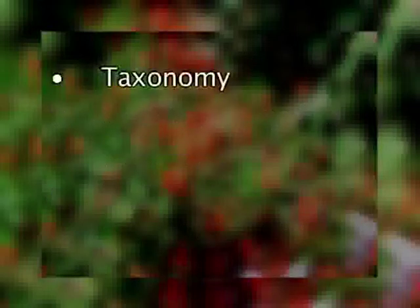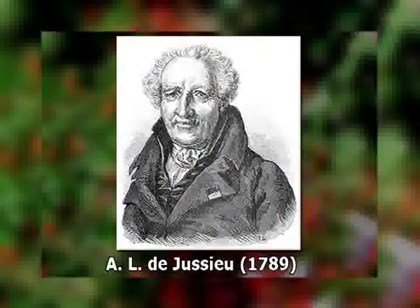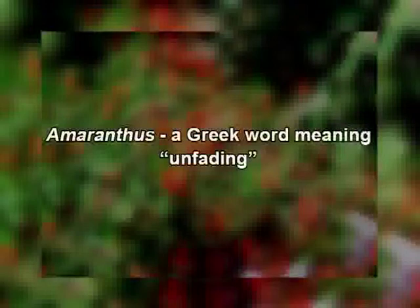Amaranthaceae is commonly known as the amaranth family. The family was first established as a formal taxonomic category under the name Amaranthaceae by a French botanist A.L. Jussieu way back in 1789. This name Amaranthaceae is actually based on the scientific name of the type genus Amaranthus. Amaranthus is basically a Greek word which means unfading, due to its characteristic persistent bracts and perianth.